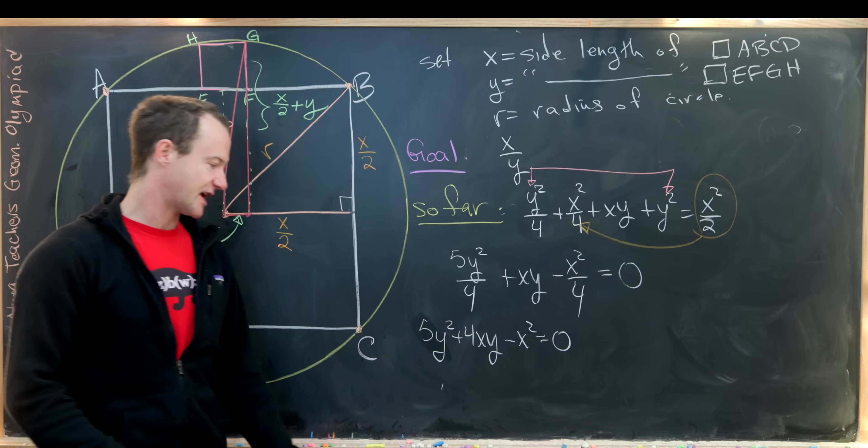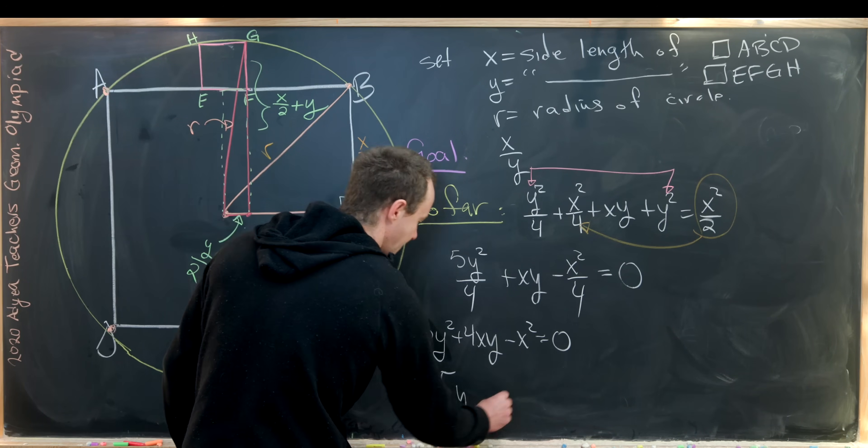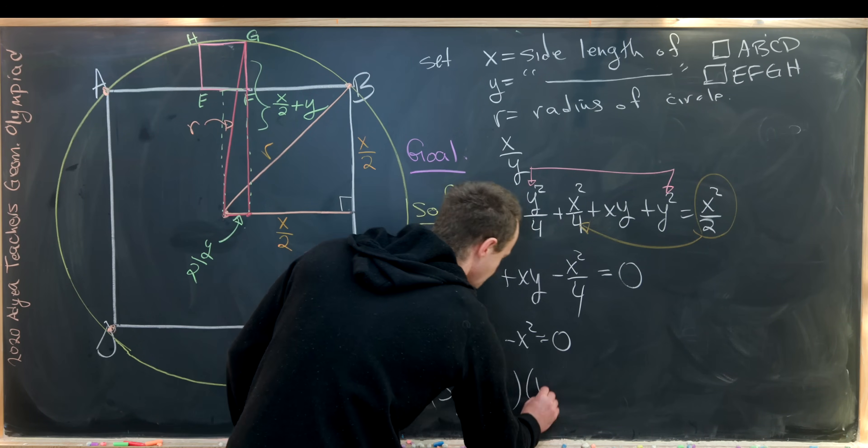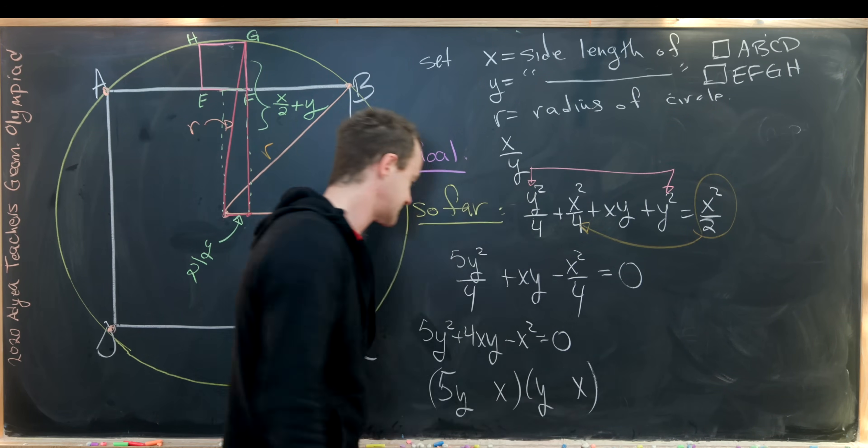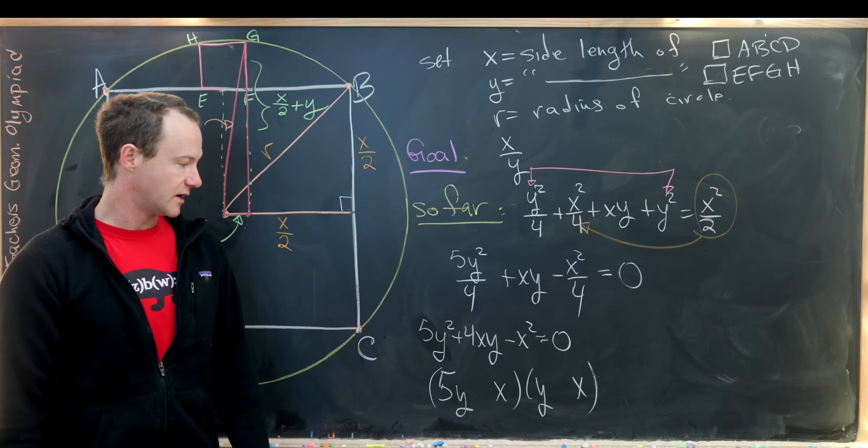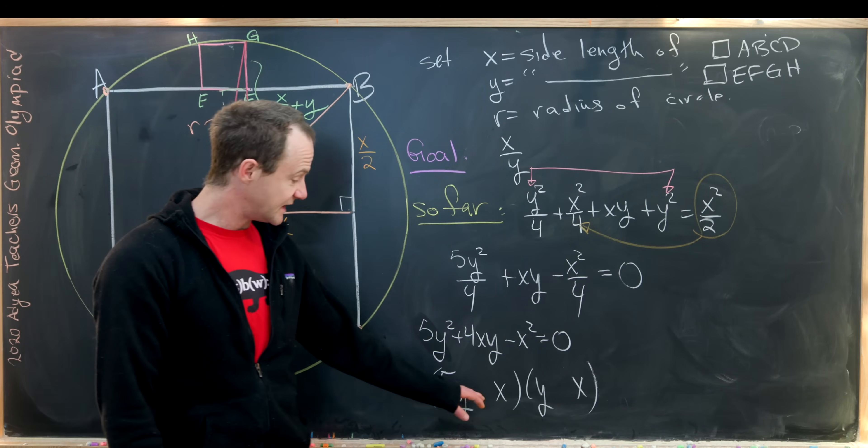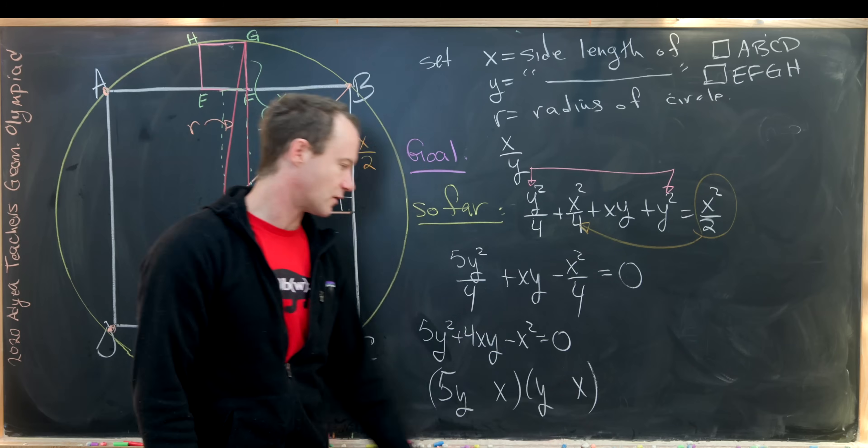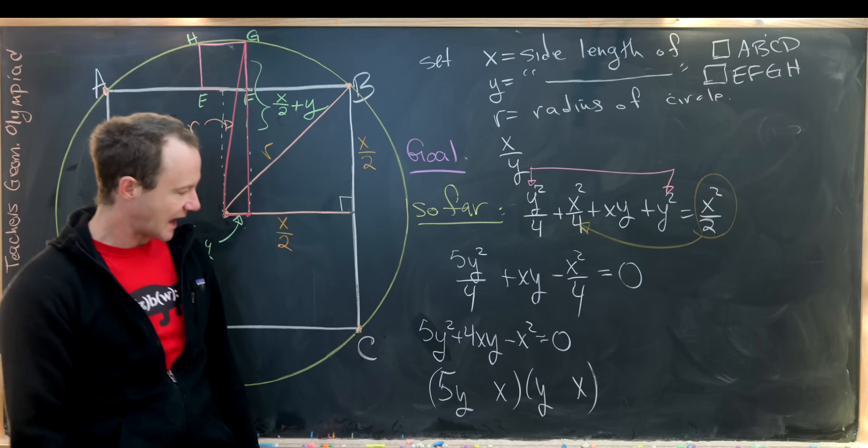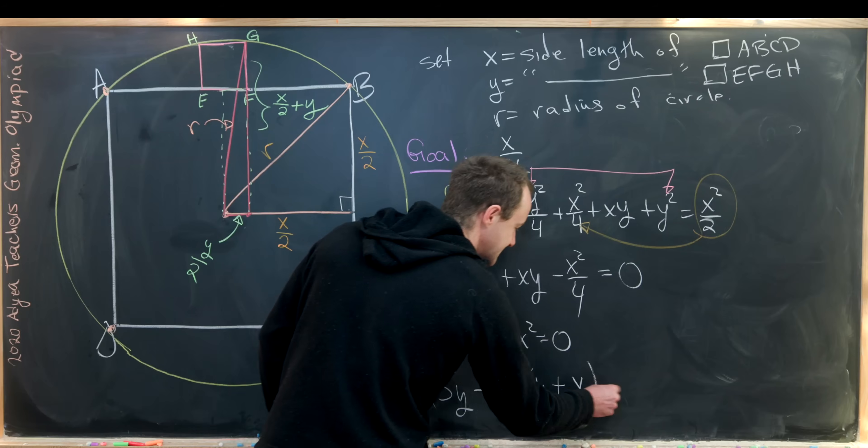Now we want to check if that will factor. So if it will factor, it'll factor involving 5Y and X, and then Y and X. That's because we need 5Y times Y to be Y squared, and then X times X to be X squared. We just need to determine if we have a plus here, a minus here, a plus here, or a minus here. And looking at it a little bit, you'll see what will work is a plus here and a minus here.